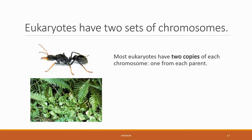Most eukaryotes, such as humans, have two copies of each chromosome — two copies of each book — one from each parent. Because of this, they are described as diploid. Di from the root word 2, and ploid meaning chromosomes. Eukaryotes can have anywhere from 1 to 720 pairs of chromosomes, or different pairs of books.